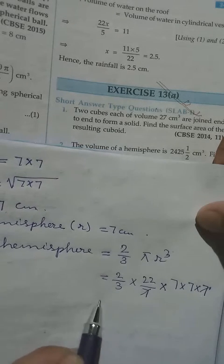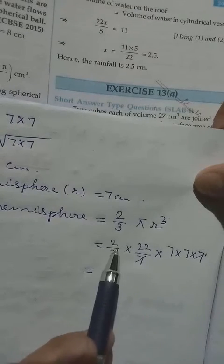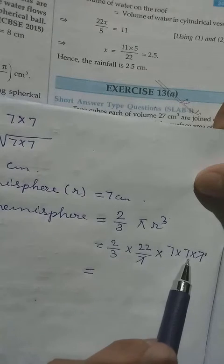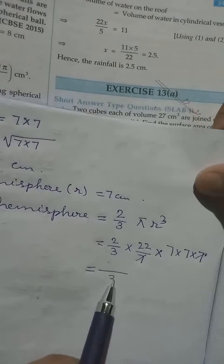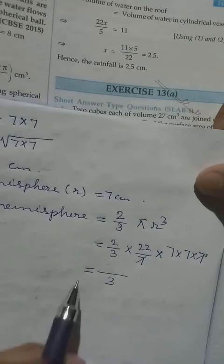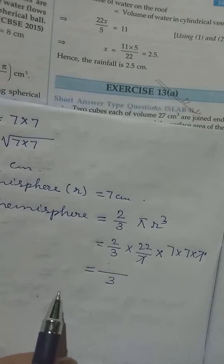So we can multiply 3 times, so now 7 times 7 times 7. 7 up, 7 down we can cancel. Then now we are left with 3, we cannot cancel, so what to do? Multiply 2, 22, 7 and 7. What you get up, write up, what you get down, write down. Then after you multiply, divide by 3.